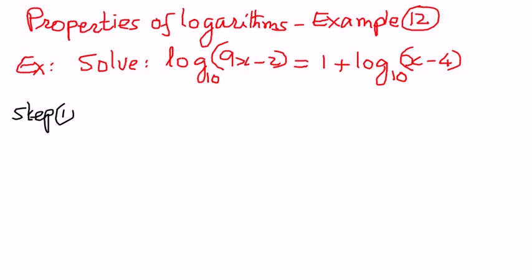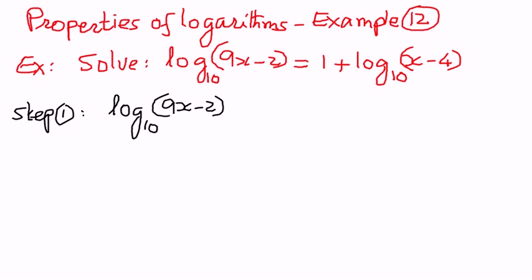Step number one. On the left-hand side, we have log(9x minus 2) to the base 10. If we subtract log(x minus 4) to the base 10 on both sides, that cancels out on the right-hand side, leaving us with log(9x minus 2) minus log(x minus 4) to the base 10 is equal to 1.